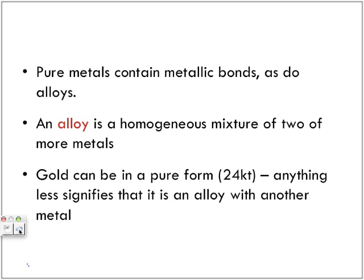So pure metals contain metallic bonds, as do alloys. An alloy is a homogeneous mixture of two or more metals. Homogeneous meaning pretty much mixed, and it's consistent throughout. You cannot see the difference throughout the entire substance that you're looking at.